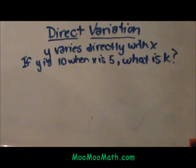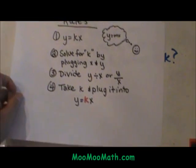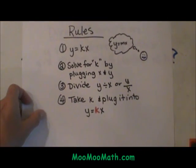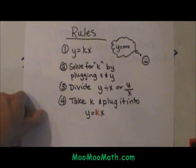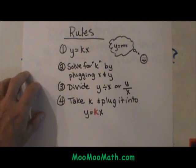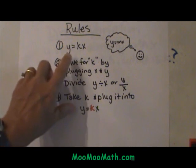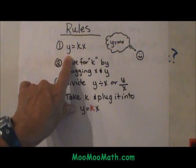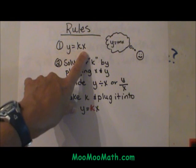First of all, we need to know a set formula. Here are the rules for direct variation. When you are solving for k, you need this formula. This is the direct variation formula. y equals k times x.